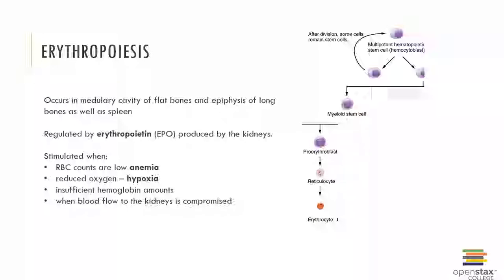Regulation of erythropoiesis occurs via erythropoietin, which is produced primarily by the kidneys. EPO is produced when red blood cell counts are low, as in anemia; if there is a reduced oxygen concentration, as in hypoxia; if there is insufficient hemoglobin amounts; or when blood flow to the kidneys is compromised.